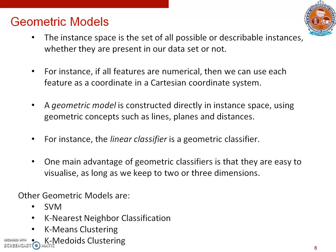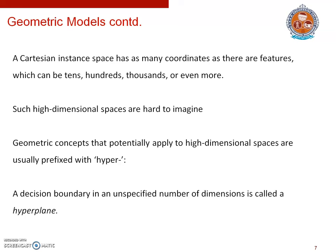For instance, a linear classifier given by the equation sigma i equals 1 to n: w_i * x_i greater than t, is a geometric classifier. One main advantage of geometric classifiers is that they are easy to visualize as long as we keep the number of dimensions to 2 or 3. Other geometric models include support vector machines, k-nearest neighbor classification, k-means clustering, k-medoids clustering, etc. In geometric models, a Cartesian instance space has as many coordinates as there are features, which can be tens, hundreds, thousands, or even more. Such high-dimensional spaces are hard to imagine but very common in machine learning. Geometric concepts that apply to high-dimensional spaces are usually prefixed with 'hyper'; for instance, a decision boundary in an unspecified number of dimensions is called a hyperplane.